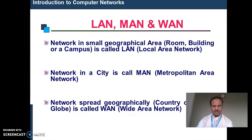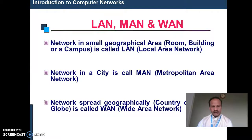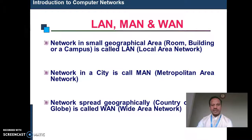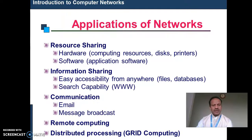There are three types of computer networks: Local Area Network, Metropolitan Area Network, and Wide Area Network. A network in a small geographic area is called a Local Area Network. A network within a city is called a Metropolitan Area Network. If it is widespread throughout the country, it is called a Wide Area Network.